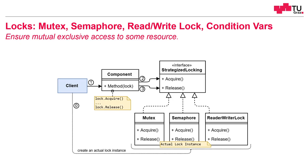So why do we lock? The idea is to ensure mutually exclusive access to some resource. This resource can be a file, a common data store, or a variable which we want to change from multiple threads. To do this, we use locks, and these locks ensure that a specific critical section is only executed by a single thread. In the beginning of the critical section, we acquire this lock, and in the end, we release this lock again.